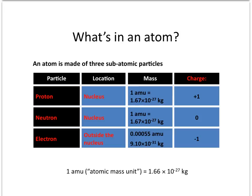Now we can divide the atom into subatomic particles, and we'll talk about that in the next couple of slides. There are three subatomic particles within the atom: the proton, the neutron, and the electron.